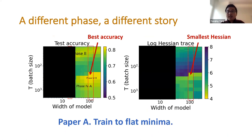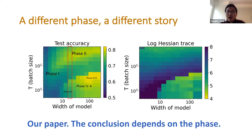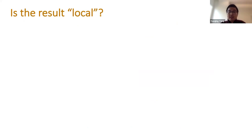So if Paper A only looks at the right part of this phase plot, its conclusion would be that one should train to a flat local minimum. If Paper B only looks at the left half, the conclusion is that you don't want to train to a flat local minimum. Our paper says that's not the complete picture — if you want the complete picture, you have to look at both sides. The right answer is: it depends. You should measure the phase and then decide.